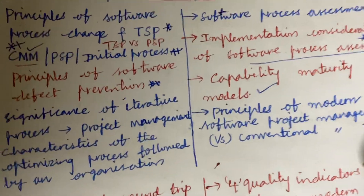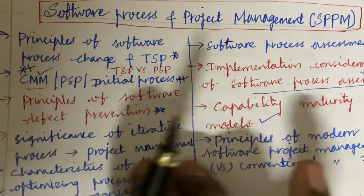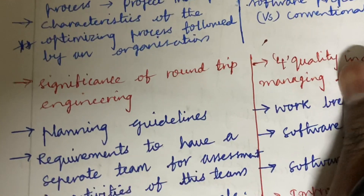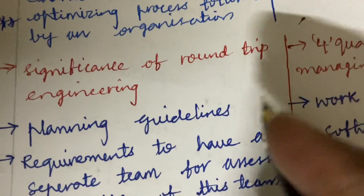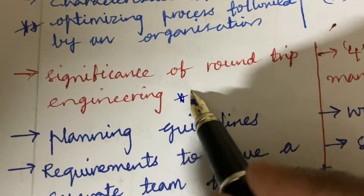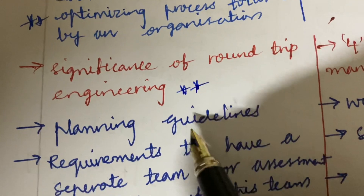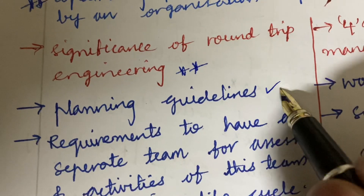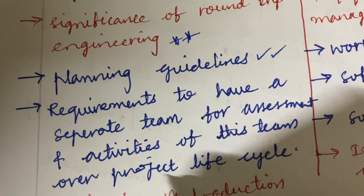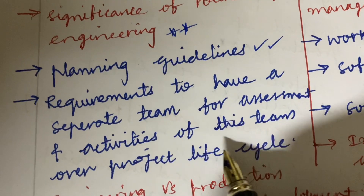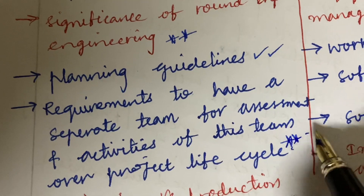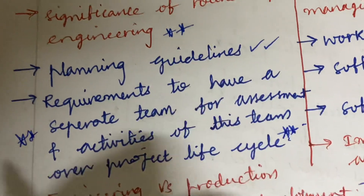If you work out these topics you will be getting the short questions as well as the long questions. Moving to the next topic: the significance of roundtrip engineering is said to be one of the top most questions, and planning guidelines is said to be a three-mark question. Requirements to have a separate team for an assessment and activities of this team over the project life cycle is said to be one of the top most and general questions asked several times.